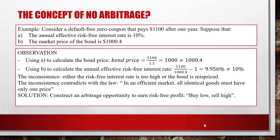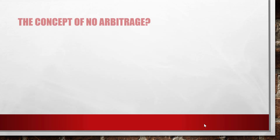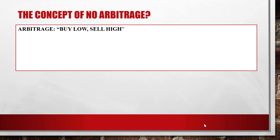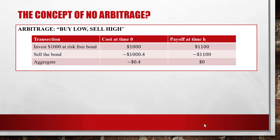To get rid of this contradiction, we will construct an arbitrage opportunity to earn a risk-free profit. That risk-free profit strategy is called buy low and sell high. At time zero, we buy a $1,000 risk-free bond. The cost at time zero is $1,000, and the payoff at time h using the 10% interest rate is $1,100.